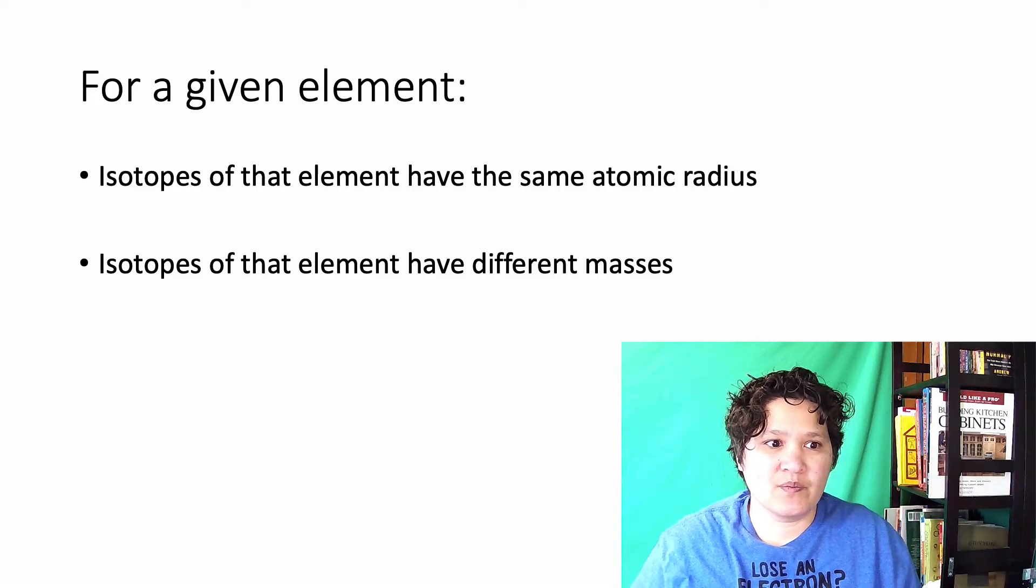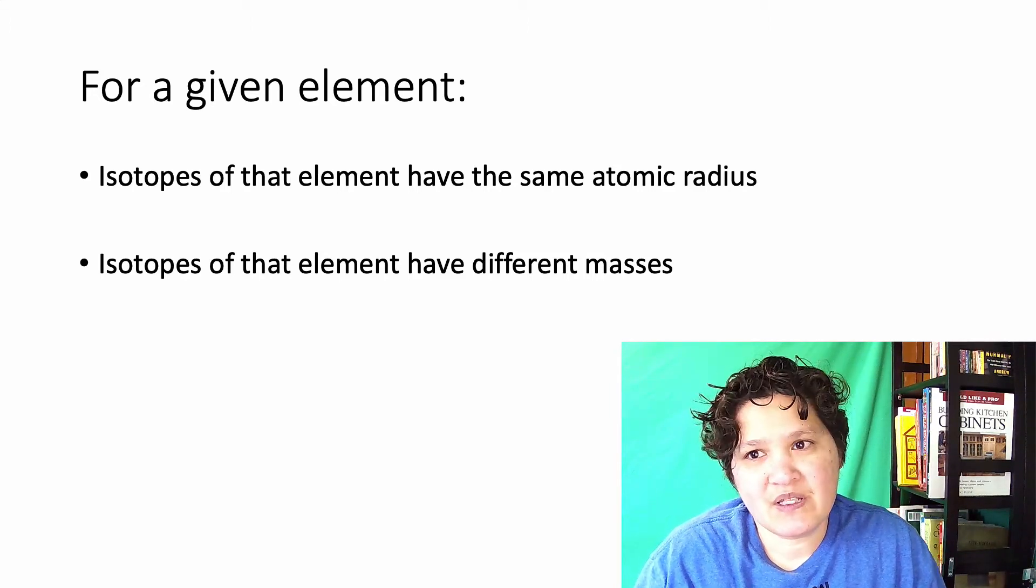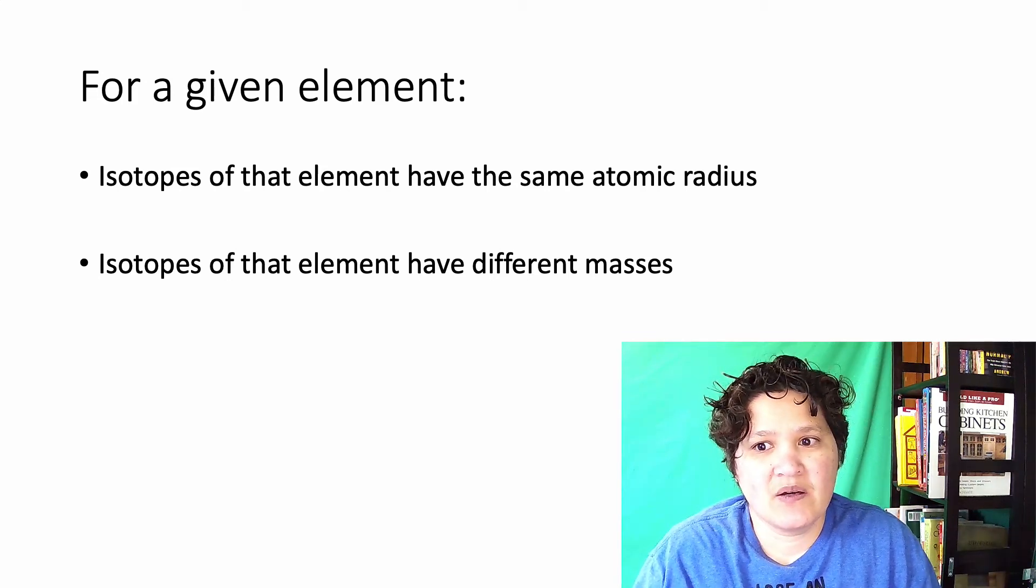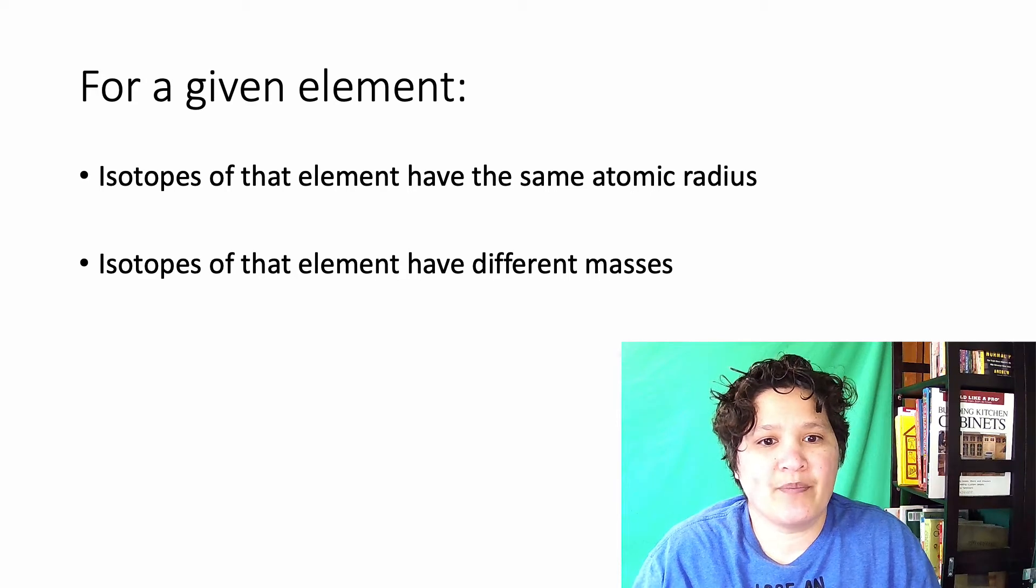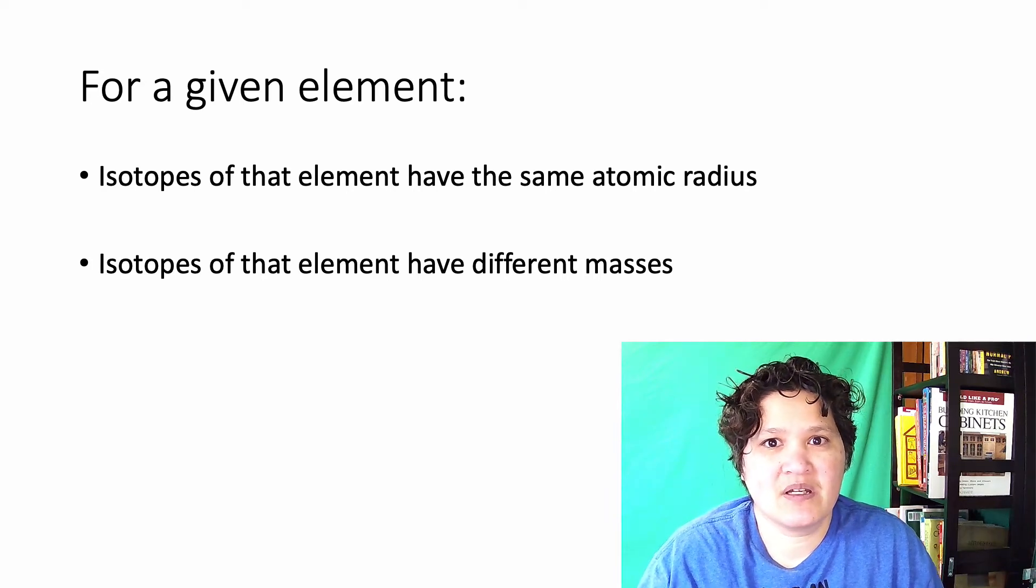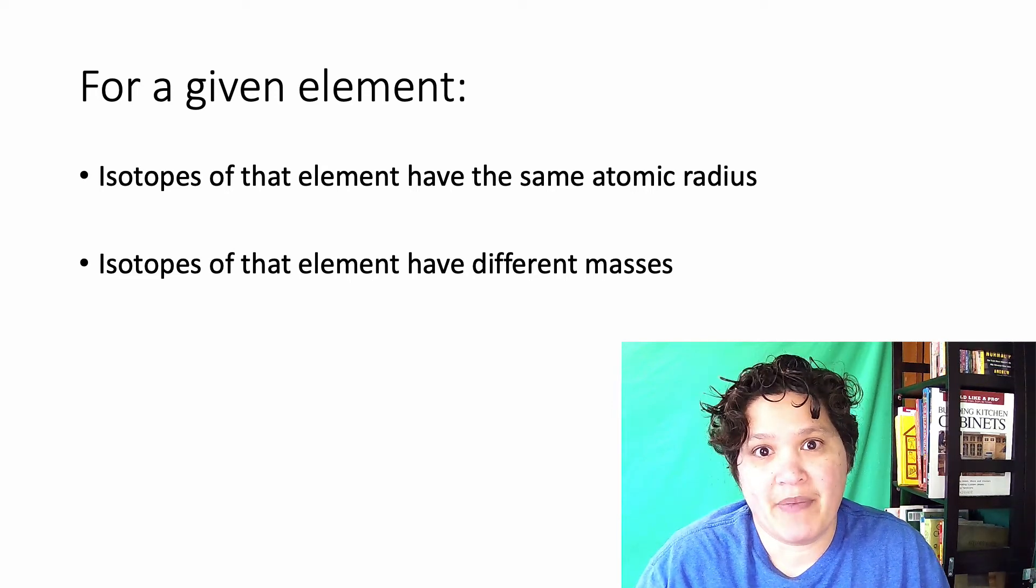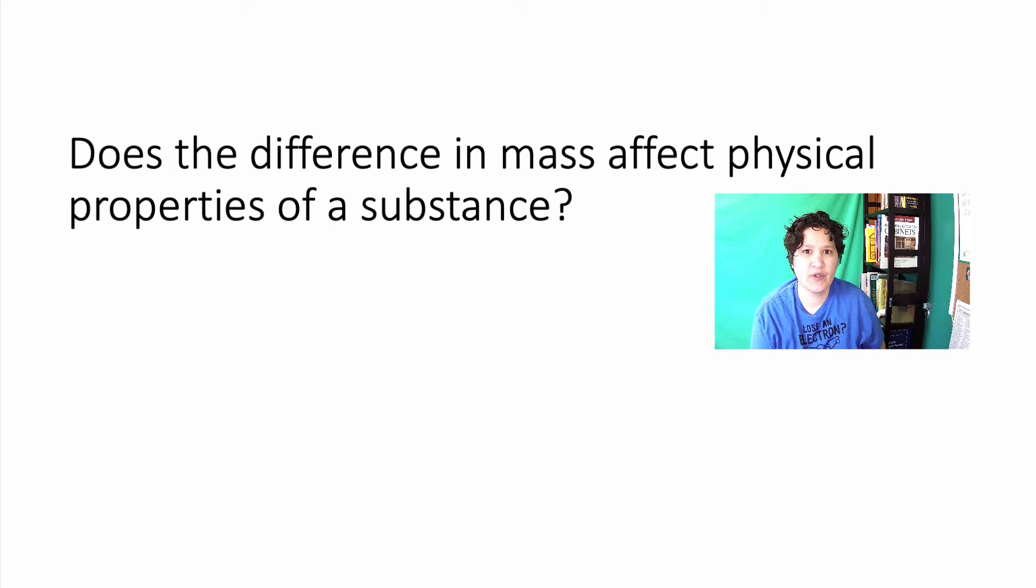So we talked about this briefly in class on Tuesday. First of all, that there are differences between isotopes of the same element, but that difference is really more about mass than about size. So different isotopes of the same element have the same, more or less, atomic radius, but noticeably different masses. But what does that mean to say that something has a higher mass? What effect does that have? Would that mass difference affect the physical properties, not just of the atom, but of any substance of which that atom is a part?